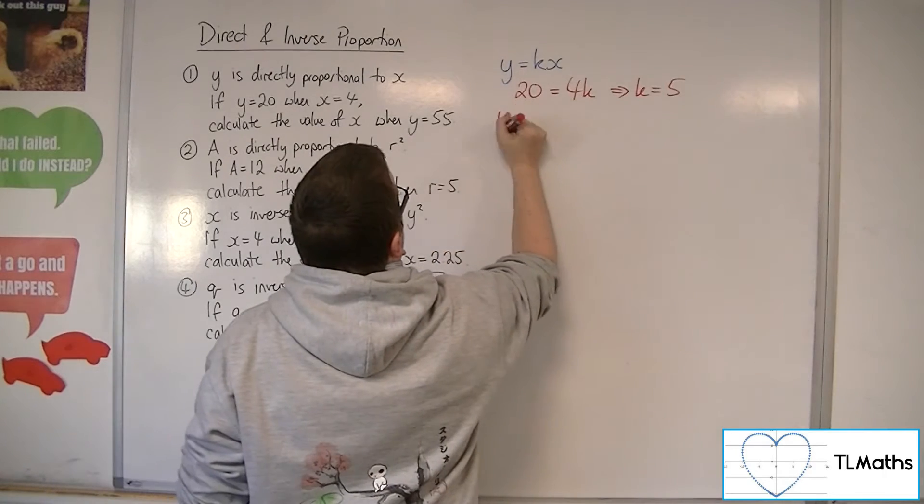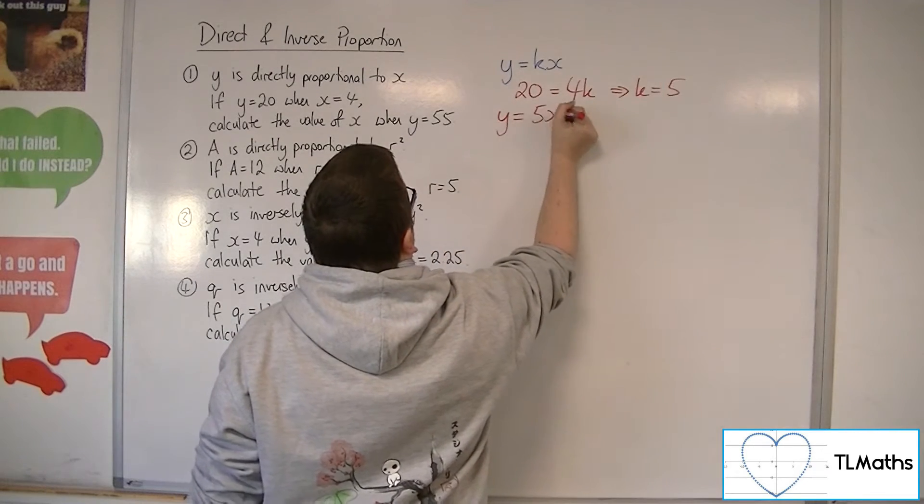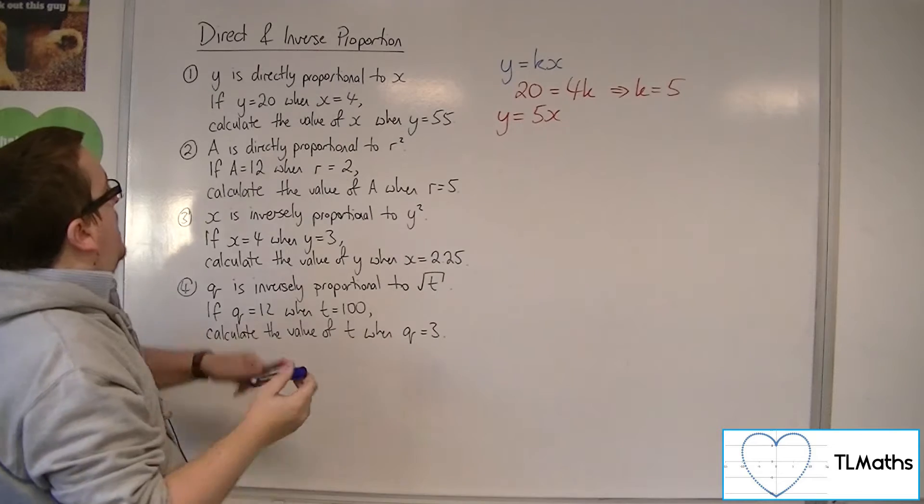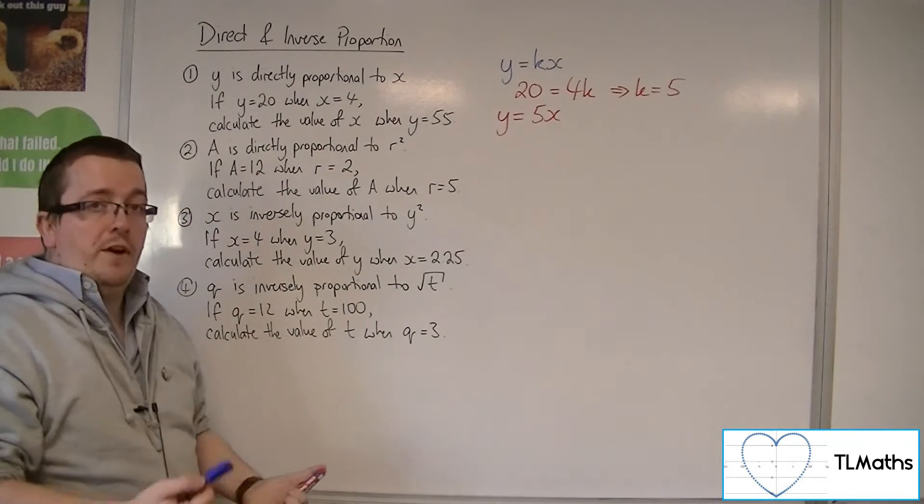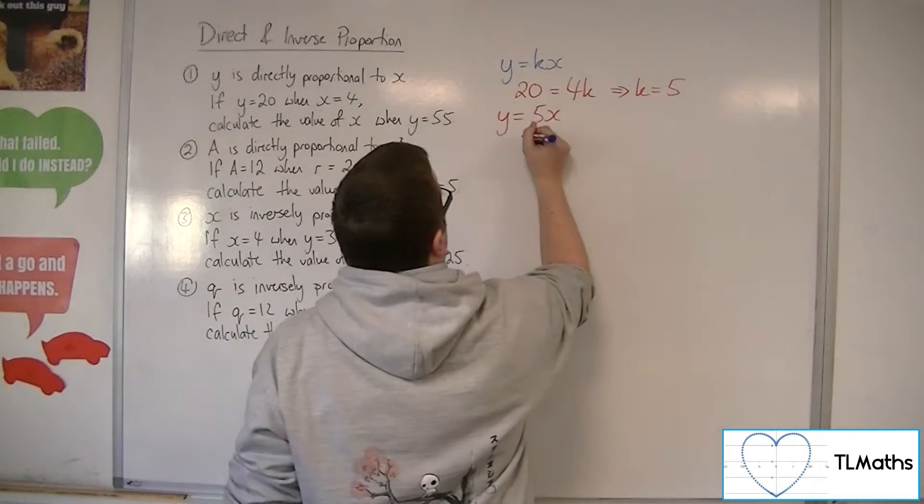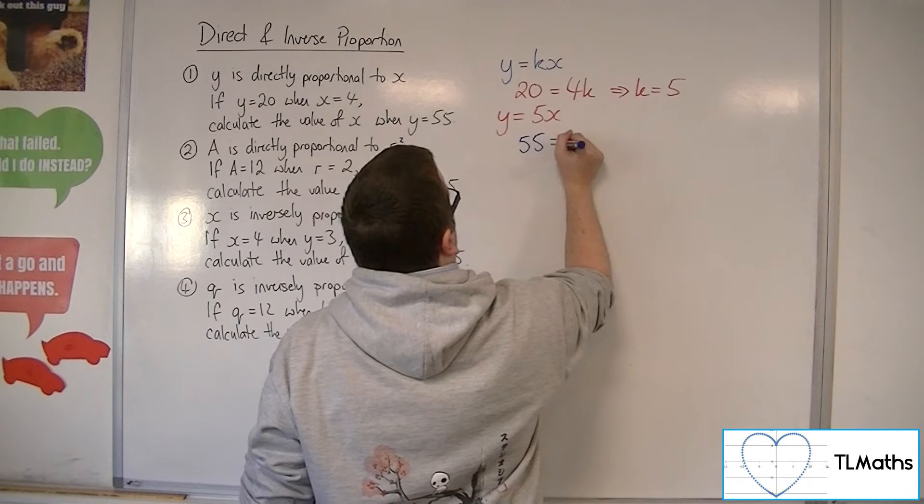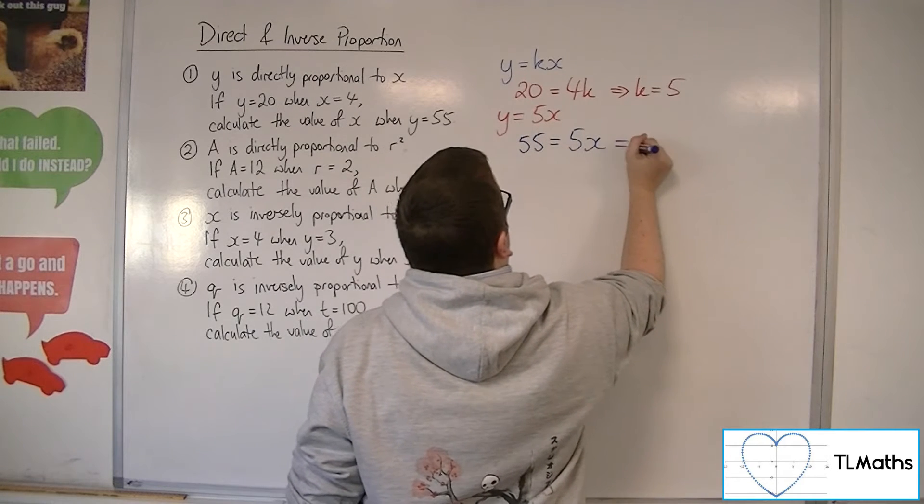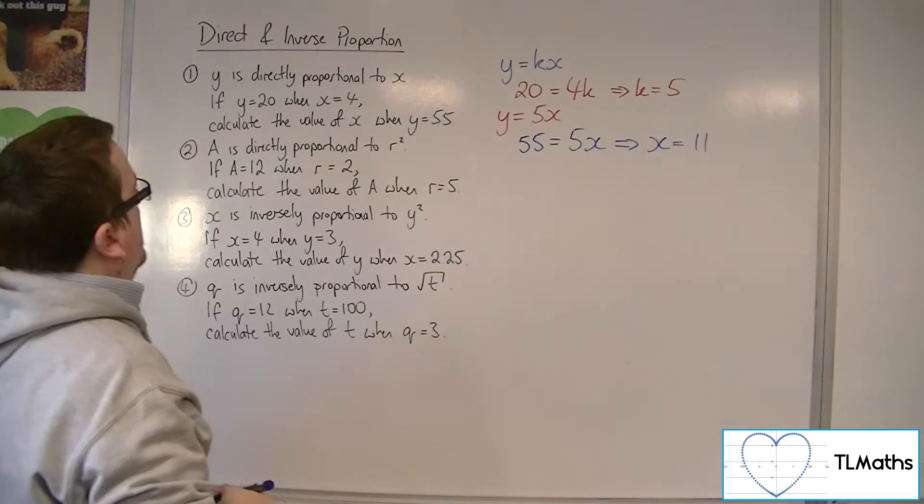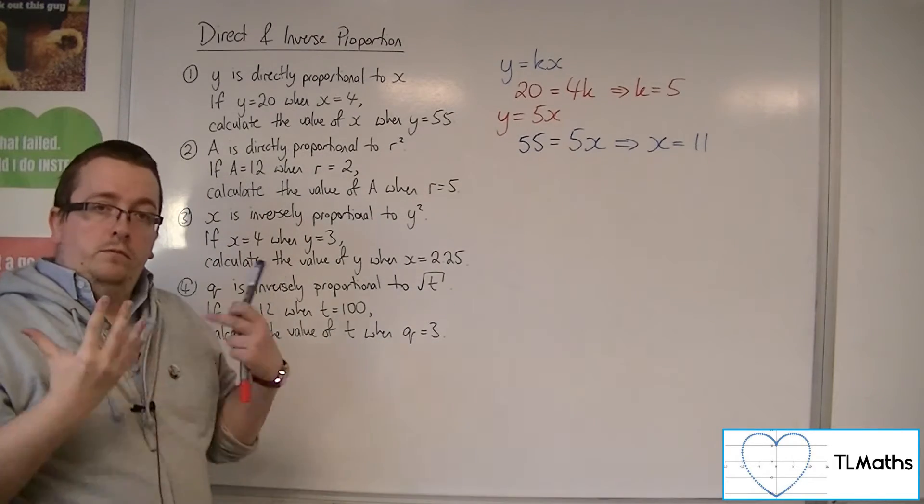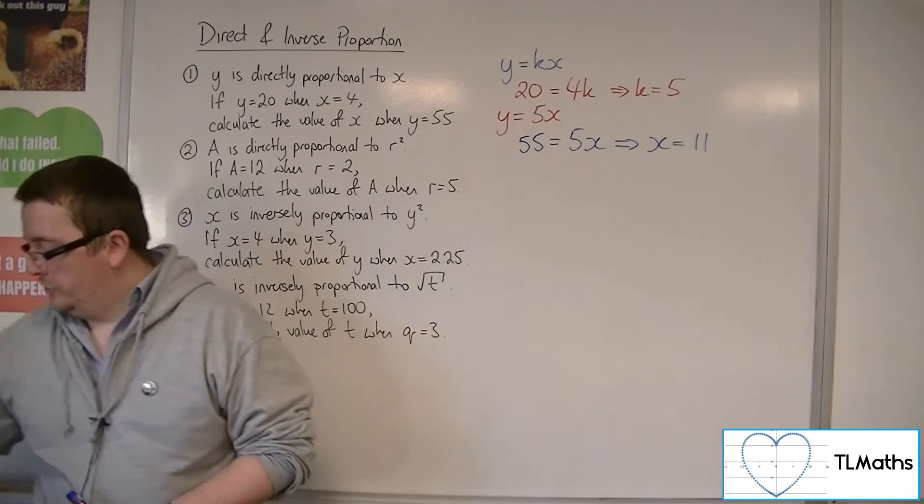So if y is equal to 5x, that should allow us then to find or calculate the value of x when y is 55. So when y is 55, we've got 5x and so x must be 11. And that's how we can solve a problem like that for direct proportion.